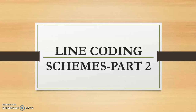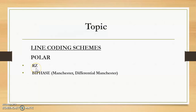In the previous video we discussed two line coding schemes: unipolar NRZ and polar NRZ. In this video we will continue with line coding schemes, studying two types of polar line coding: RZ and biphase. Under biphase we have two types: Manchester and differential Manchester.